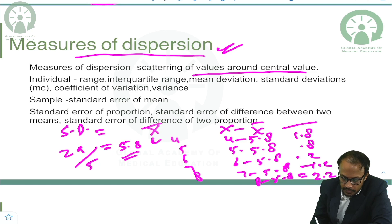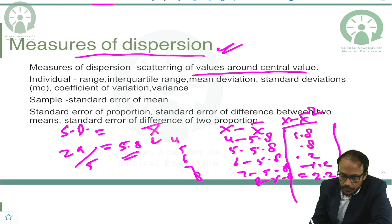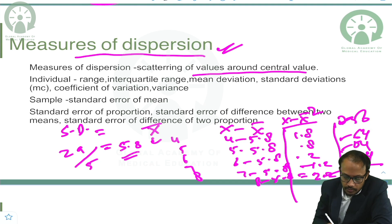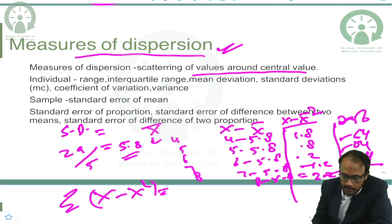Then all the x minus mean values are squared. For example, 1.8 squared, 0.8 squared, 0.2 squared, and so on. We get values such as 2.56, 0.64, 0.04, 1.44. All these squared values are summed — the summation of all (x minus x̄)² values — giving approximately 5.